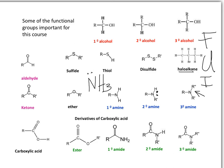Another family introduced in yesterday's lecture is the family of carbonyl compounds. A carbonyl is a carbon making a double bond with oxygen. This carbonyl has polarity because oxygen is much more electronegative than carbon, so oxygen pulls electron density from the carbon. The double bond is polarized, meaning those four electrons will be closer to the nucleus of oxygen than to the nucleus of carbon. Therefore, we can place a partial positive charge on that carbon.